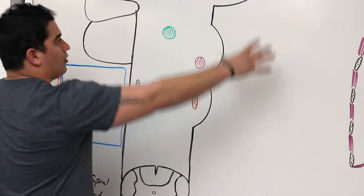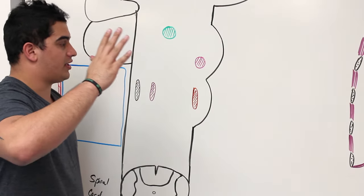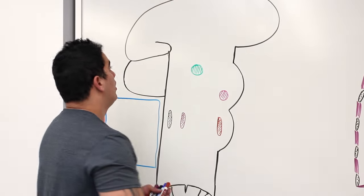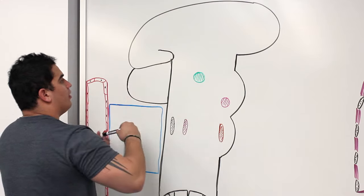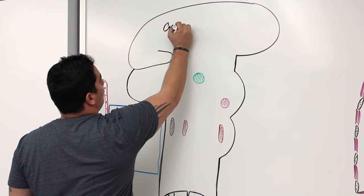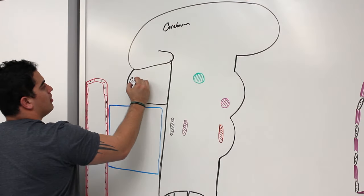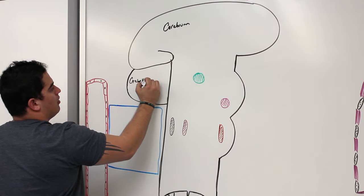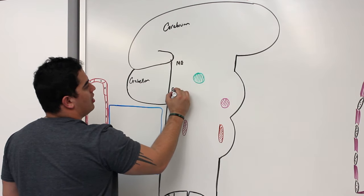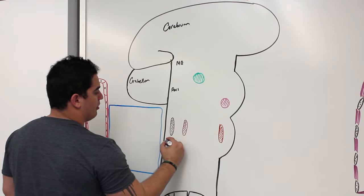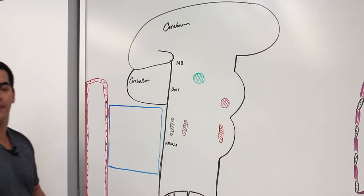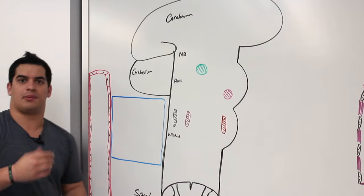Inside the central nervous system, taking a sagittal cut and looking at it from the lateral view: this structure up here is the cerebrum, this is the cerebellum, this is the midbrain (MB), this is the pons, this is the medulla, and down here is the spinal cord. We'll talk about specific sections of the spinal cord.